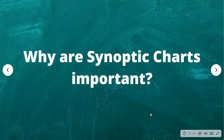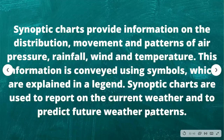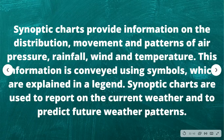Why are synoptic charts important? Synoptic charts provide information on the distribution, movement, and patterns of air pressure, rainfall, wind, and temperature, conveyed using symbols explained in a legend. Synoptic charts are used to report on current weather and to predict future weather patterns. For example, when planning an event, you can pull out your phone, check the weather for upcoming days based on generated synoptic charts, and decide whether to proceed or shift the date.